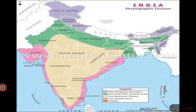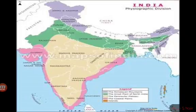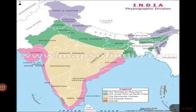The Ganges and the Indo-Gangetic Brahmaputra system are formed by alluvial deposition. The northern plains are formed by the Indo-Gangetic Brahmaputra Plains, and the plain stretches for about 3,200 km.